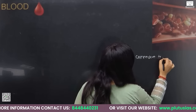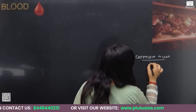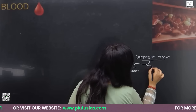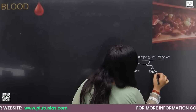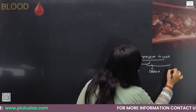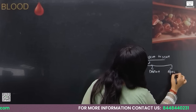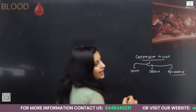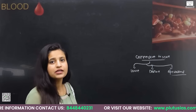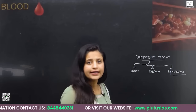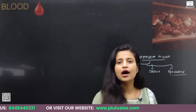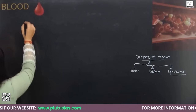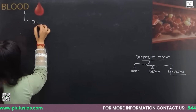Connective tissue further has three types: loose connective tissue, dense connective tissue, and specialized connective tissue. In specialized connective tissue, blood, cartilage, and bones all are included. So blood is a fluid connective tissue.